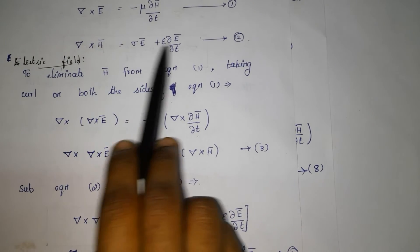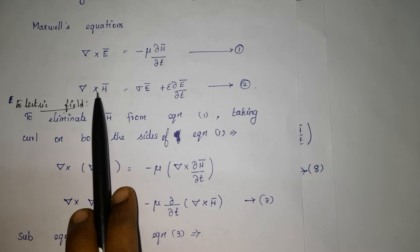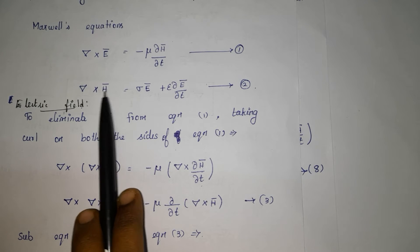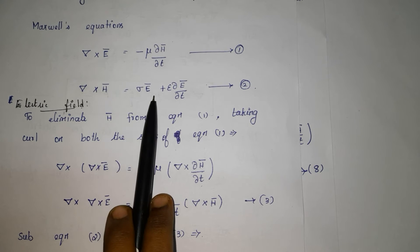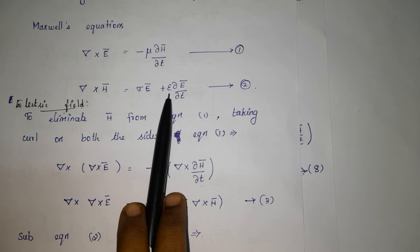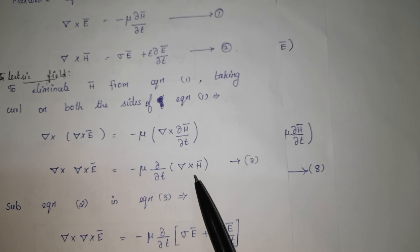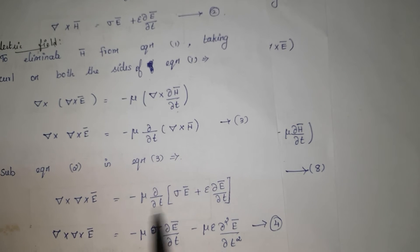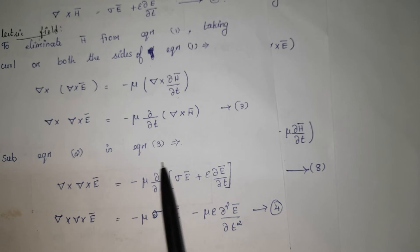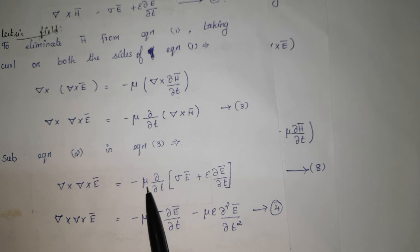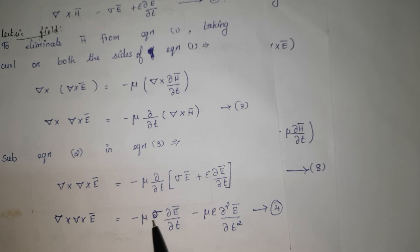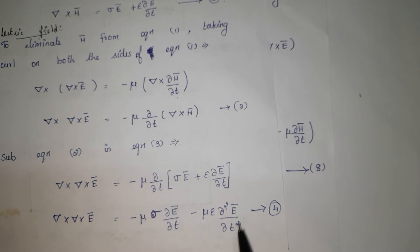Now substitute the second Maxwell equation from Ampere's circuital law, which is: del cross H vector is equal to sigma E vector plus epsilon times partial E vector divided by partial T. Substituting equation number 2 into equation number 3 and multiplying inside, we get: minus mu times partial/partial T gives minus mu sigma partial E by partial T minus mu epsilon partial squared E divided by partial T squared. This is equation number 4.